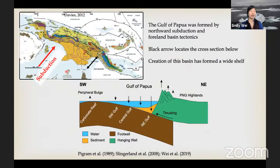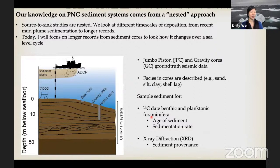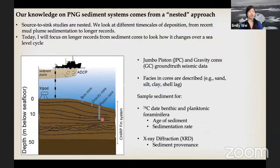The Gulf of Papua was formed by northward subduction and foreland basin tectonics. A cross section shows the southern footwall subducting under the northern hanging wall. Thrusting creates the mountainous terrain of the Papua New Guinea highlands, and adjacent to the highlands is the Gulf, which is deepest in the east and shallows towards the southwest. Our present-day knowledge of Gulf of Papua sediment dispersal comes from many studies using a nested approach under an ONR initiative called STRATAFORM, investigating timescales from recent mud plume sedimentation to longer records. Today I focus on longer records from sediment cores and seismic profiles over a sea level cycle.